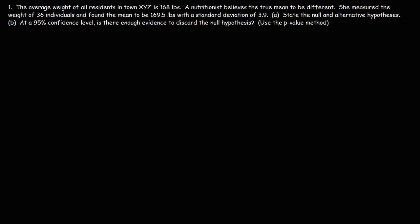Part A: state the null and alternative hypotheses. The null hypothesis is the status quo — that the average weight of all residents in this town is 168 pounds, so mu equals 168. The nutritionist believes this to be different, so the alternative hypothesis is that the mean is not 168.